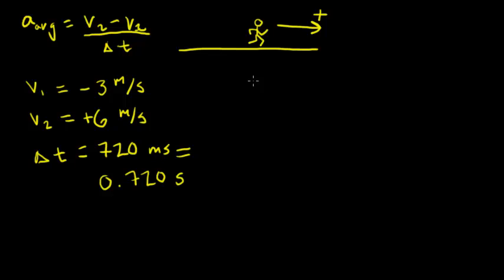So all we need to do at this point to find the average acceleration is to write that average acceleration in terms of the ending velocity, which is 6, minus the starting velocity, which is negative 3,